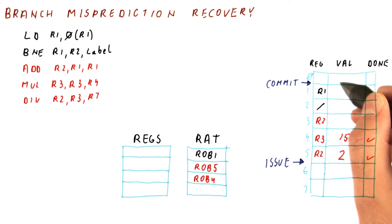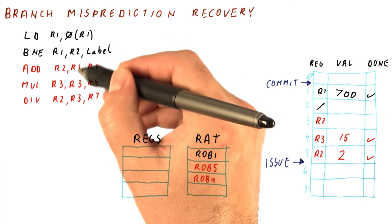Eventually, this load does complete. Let's say it brings us a value of 700, and it's marked as done. Now we're going to do the branch and the add.